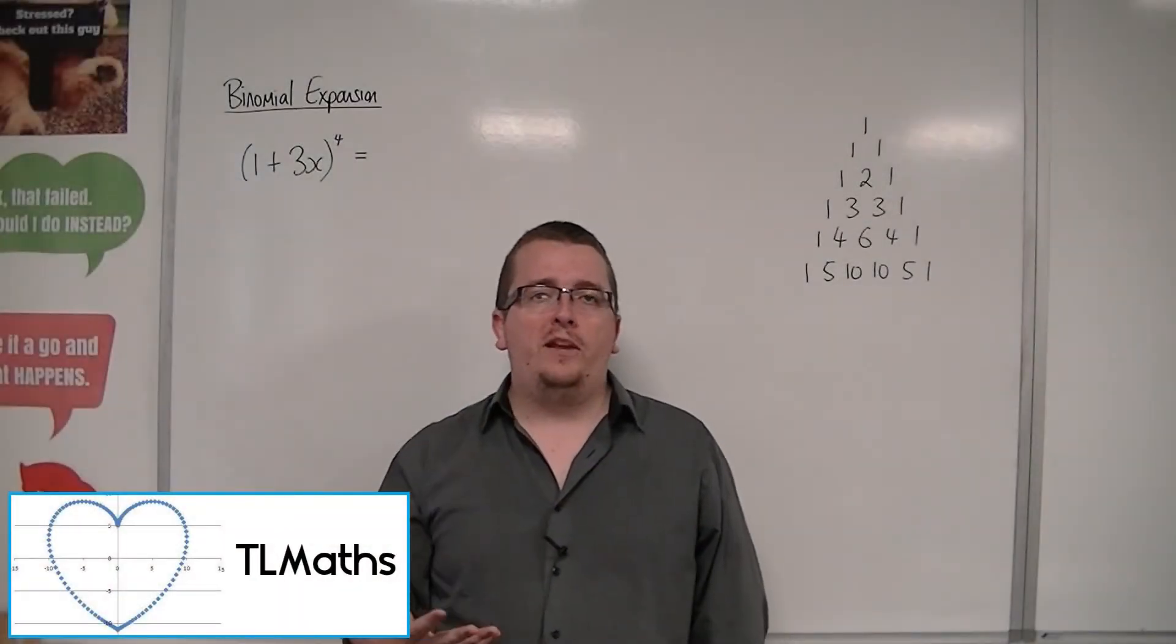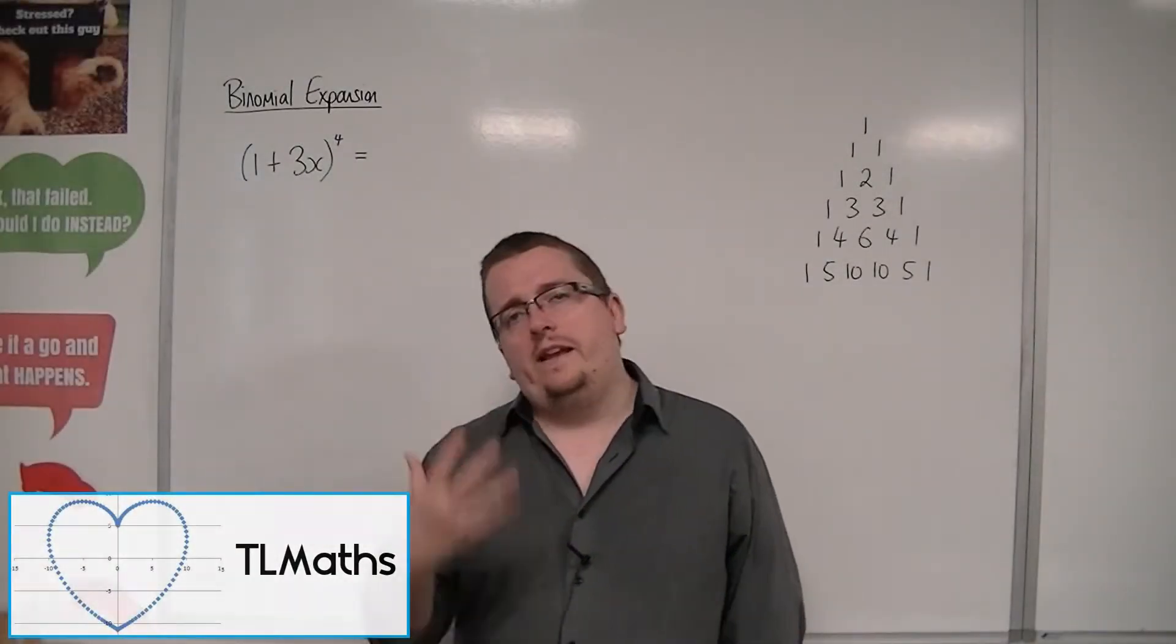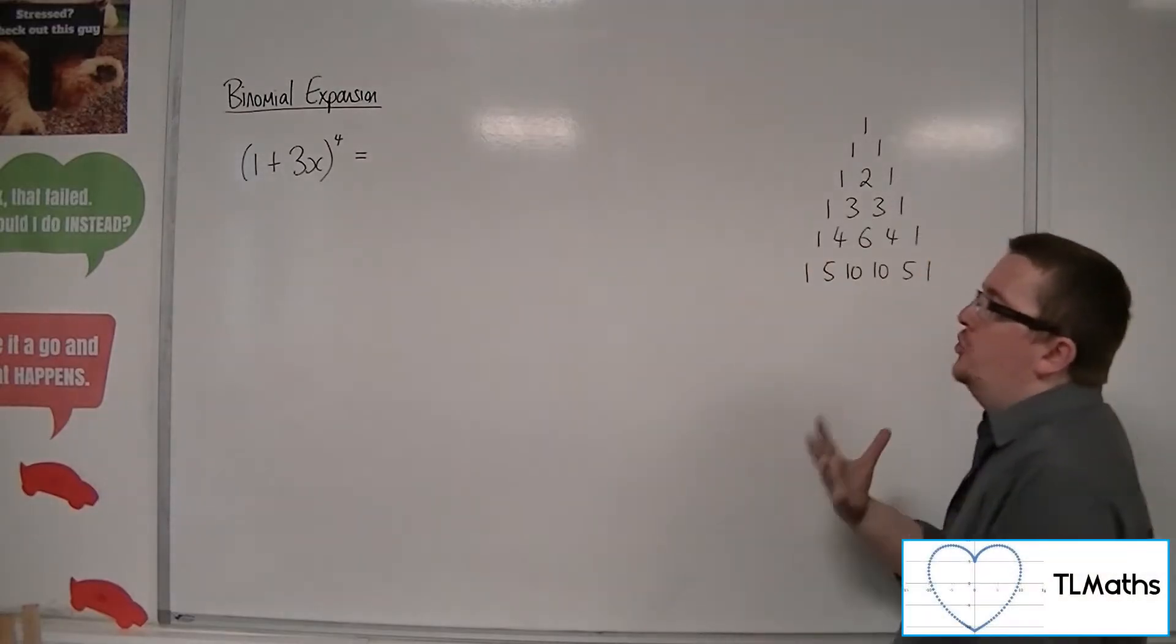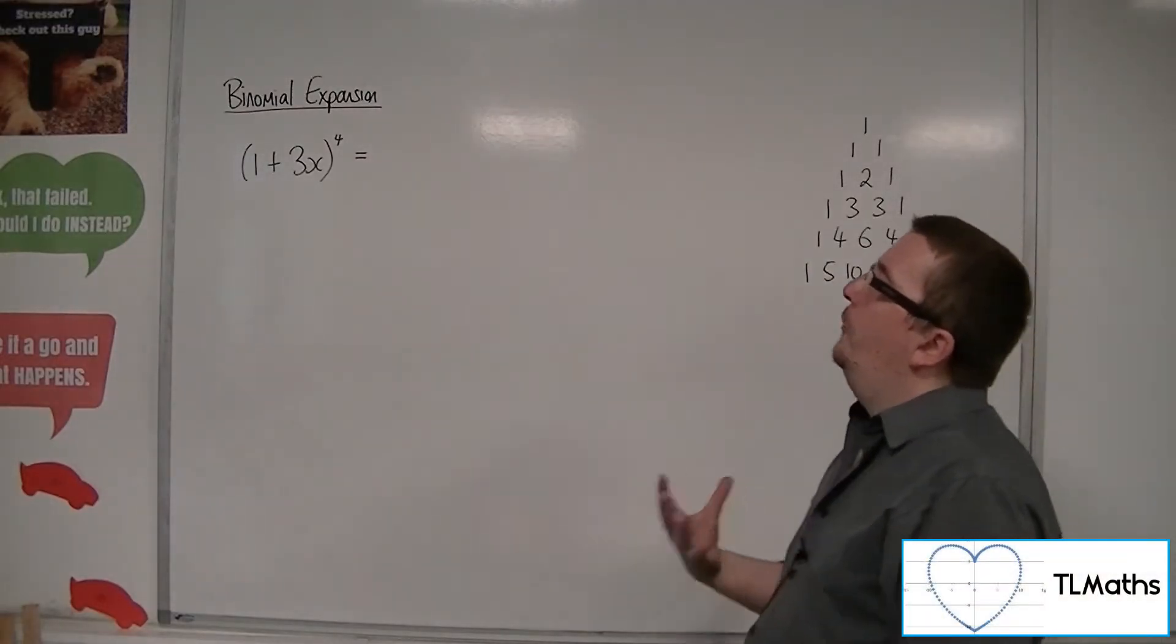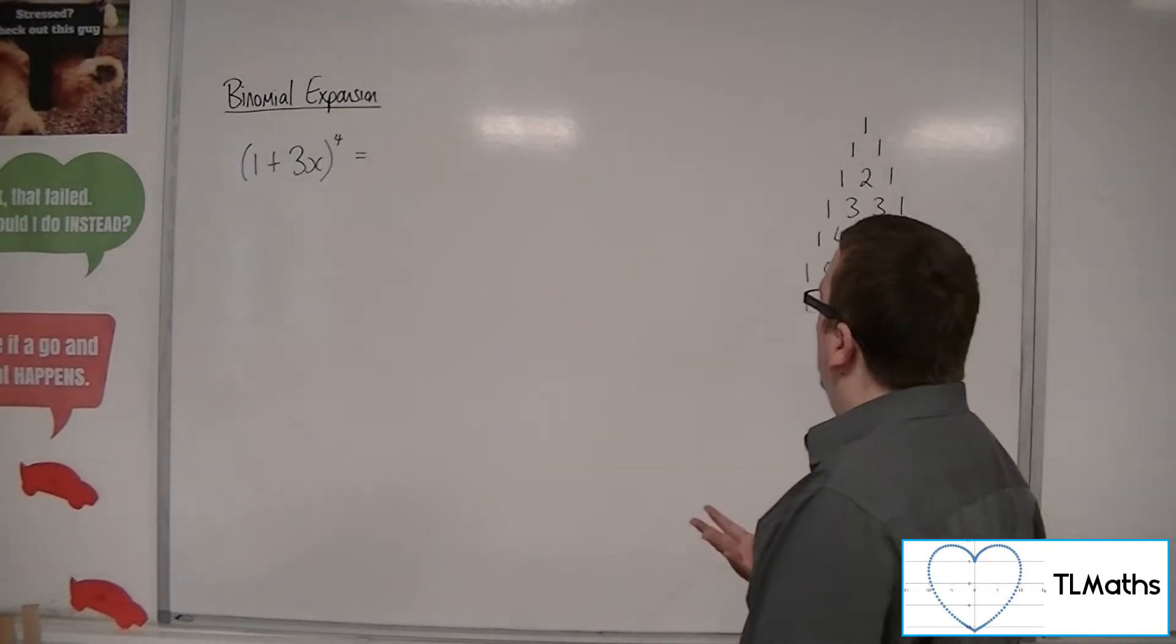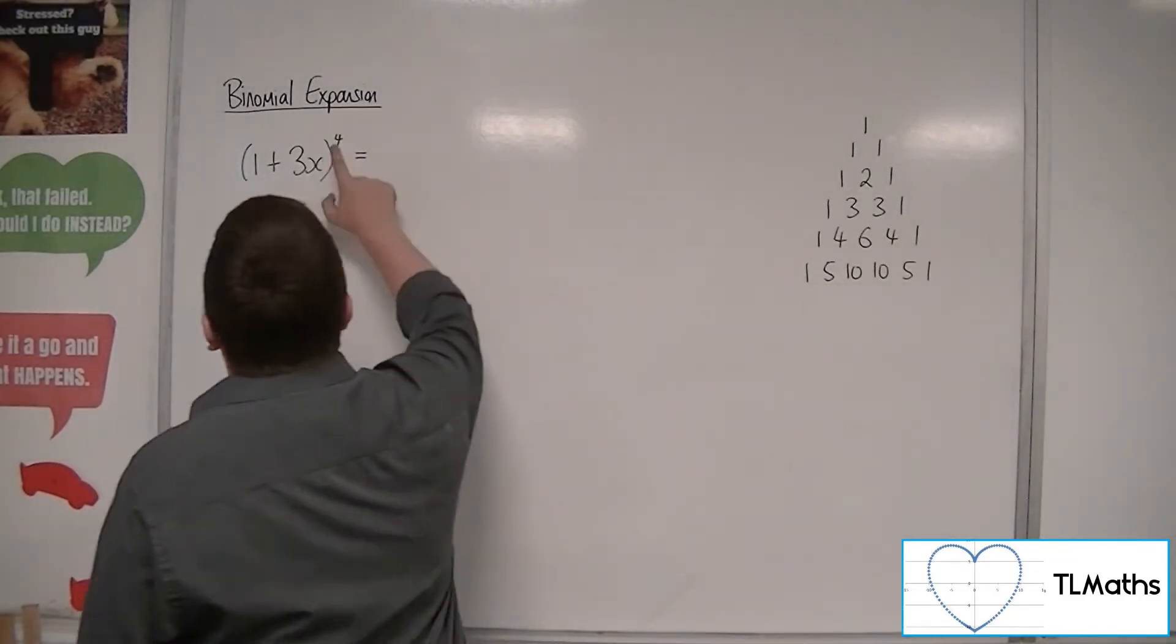So now we've seen how binomial expansion works, let's see it in an example. Let's try and expand (1 + 3x)^4 using this binomial expansion method.